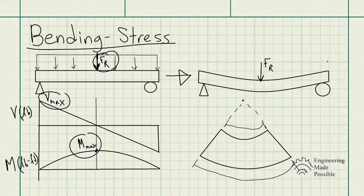Because one of the lengths is being shortened, it's being compressed, while the other end is being stretched and is in tension. This gives you a better idea of why the top portion experiences compressive stress and the bottom portion experiences tensile stress.